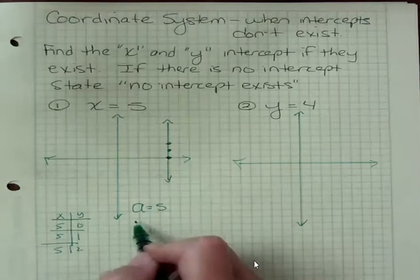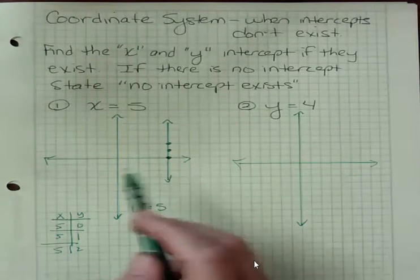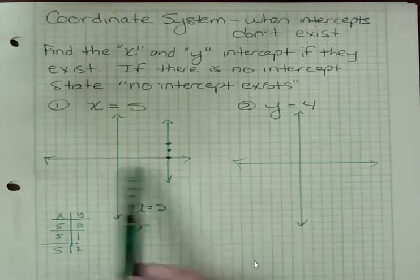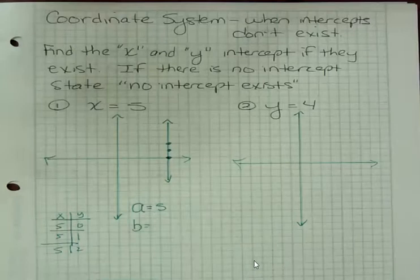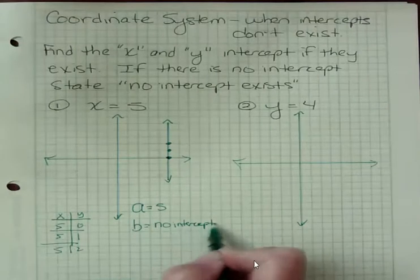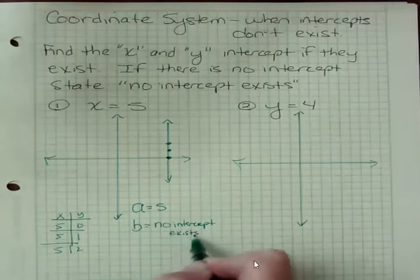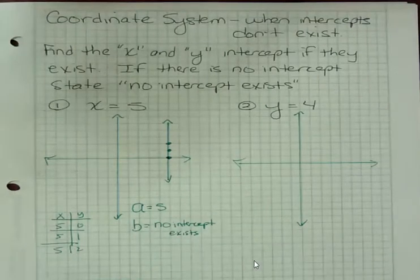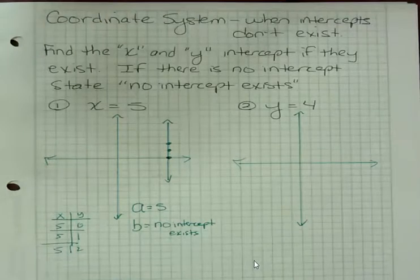But what about B, where do I cross the y axis? Well, this line is parallel to the y axis, so there would be no intercept. No y intercept exists because there is no place in this whole graph where it ever touches the y axis.